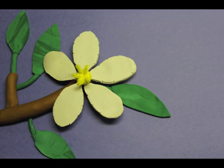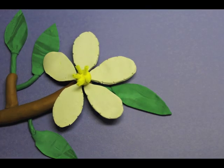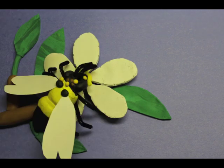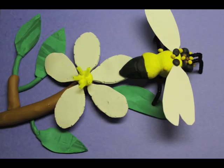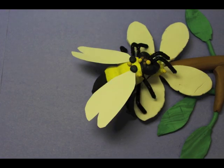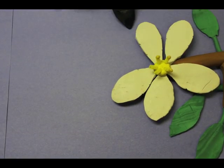Meanwhile, the farm's apple trees are blooming, but it takes a bee to turn the flowers into red delicious fruit come autumn. As it probes the flower for nectar, the bee's hairy body gets dusted with pollen, which it can then transfer to other flowers, fertilizing them and allowing the fruit to grow.